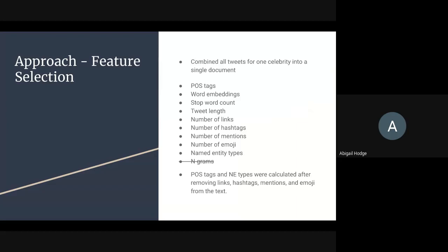So what features did we extract? One of the first features, based on work from Argaman 2009, is POS tags. That paper found that men tend to use determiners and prepositions a lot more, while women tend to use pronouns a lot more, and that has been found to be a pretty significant factor in several machine learning profiling studies since then. We also used word embeddings to capture semantics — essentially the average word vector for all words in the giant document. We also extracted stop word count and tweet length.